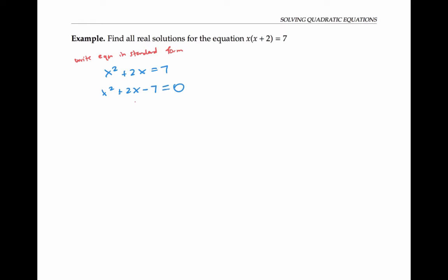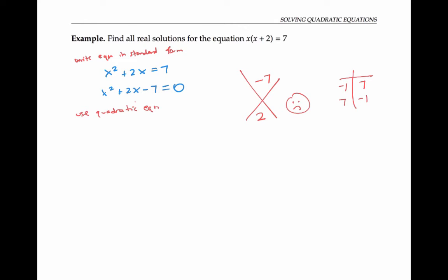I'm looking to factor it — I need two numbers that multiply to negative seven and add to two. Since the only ways to factor negative seven are negative one times seven or seven times negative one, there are no whole numbers that will work, so there's no way to factor this expression over the integers. Instead, let's use the quadratic formula. Our leading coefficient is one, so a is one, b is two, and c is minus seven. We plug into the quadratic formula: x equals negative b plus or minus the square root of b squared minus four a c, all over two a.